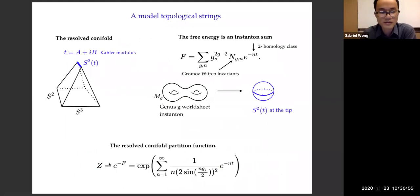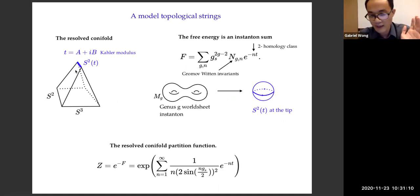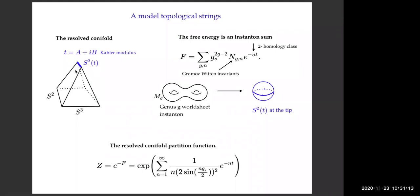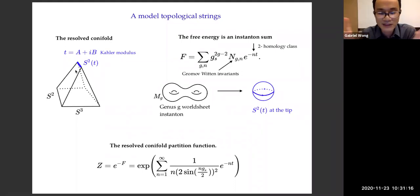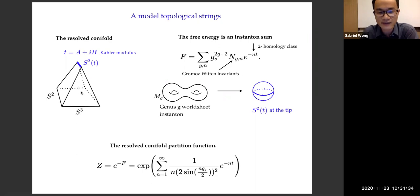There is a part of the partition function for the resolved conifold that just comes from shrinkable worldsheets. It is really just multiplying Z by another factor, but that factor can be divergent. In the papers by Vafa and collaborators, they fix it using other methods — it's just an ambiguous thing. I really think it just decouples, but there's just an extra term that you multiply Z by. We can discuss this more in the discussion session.